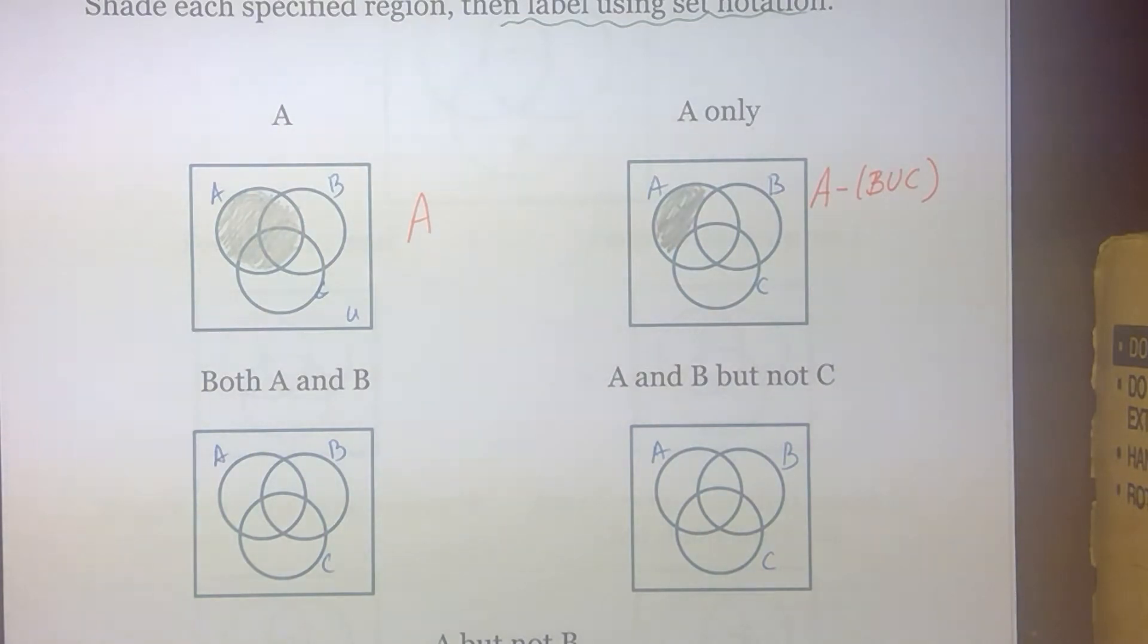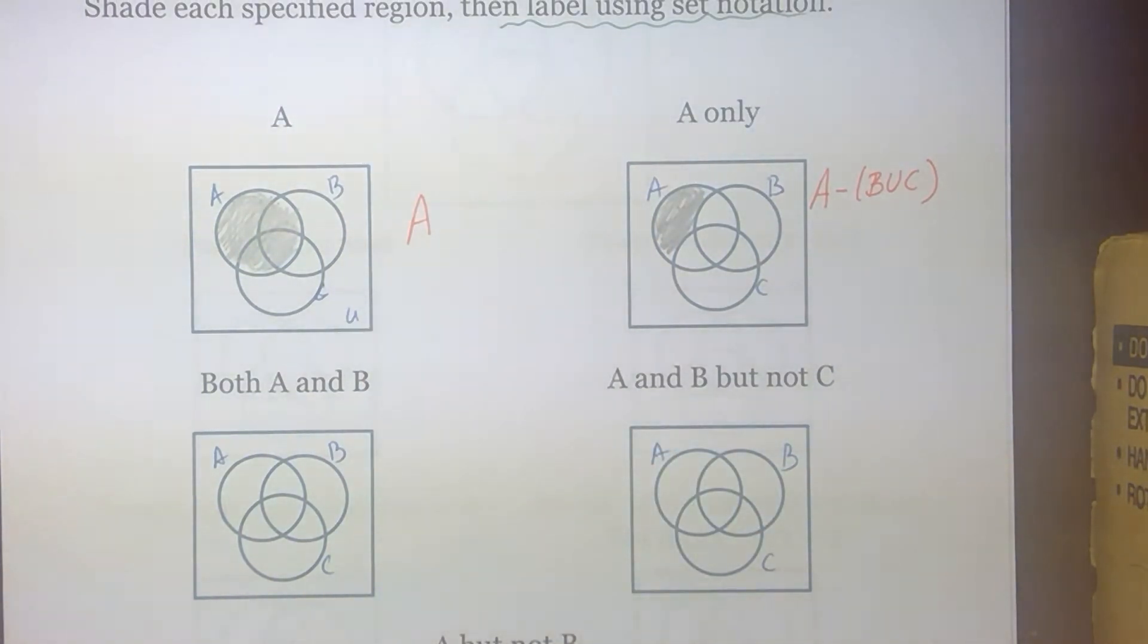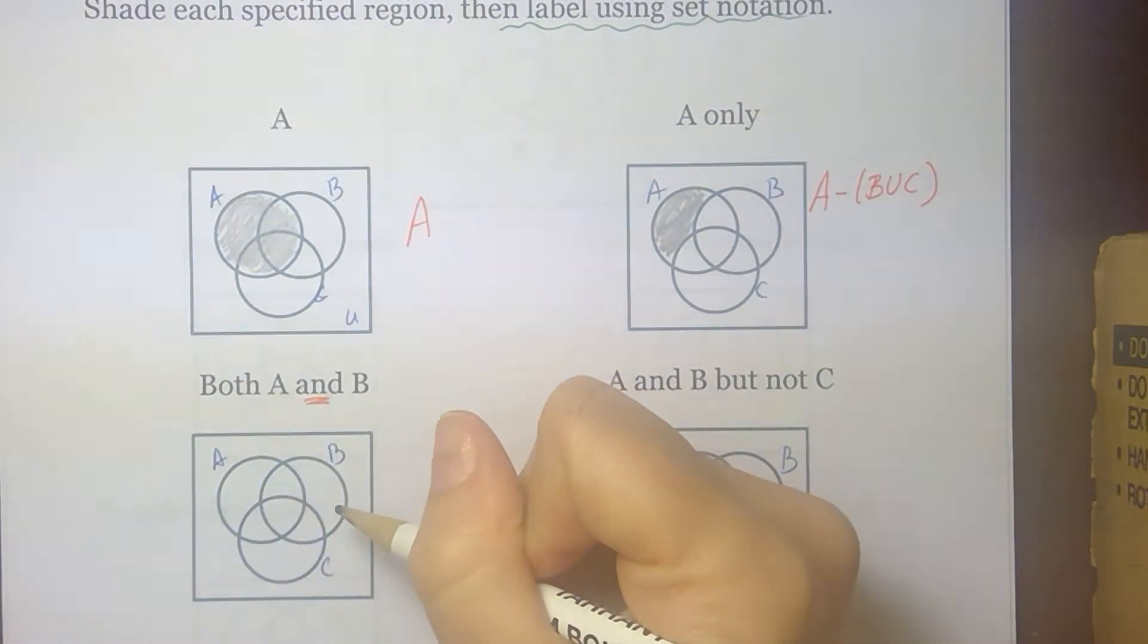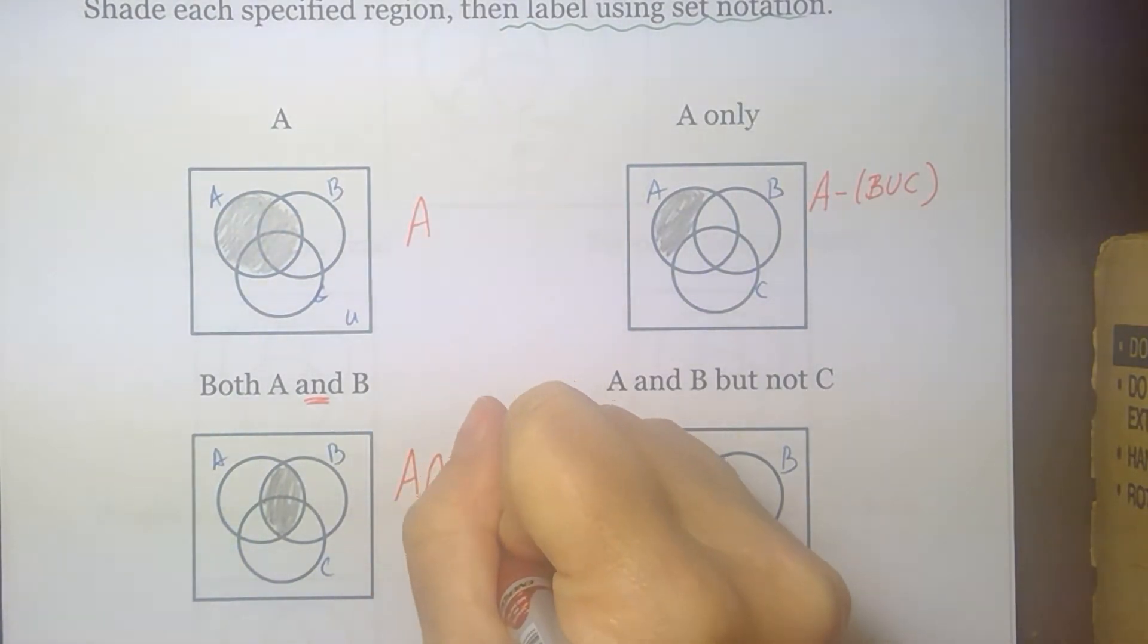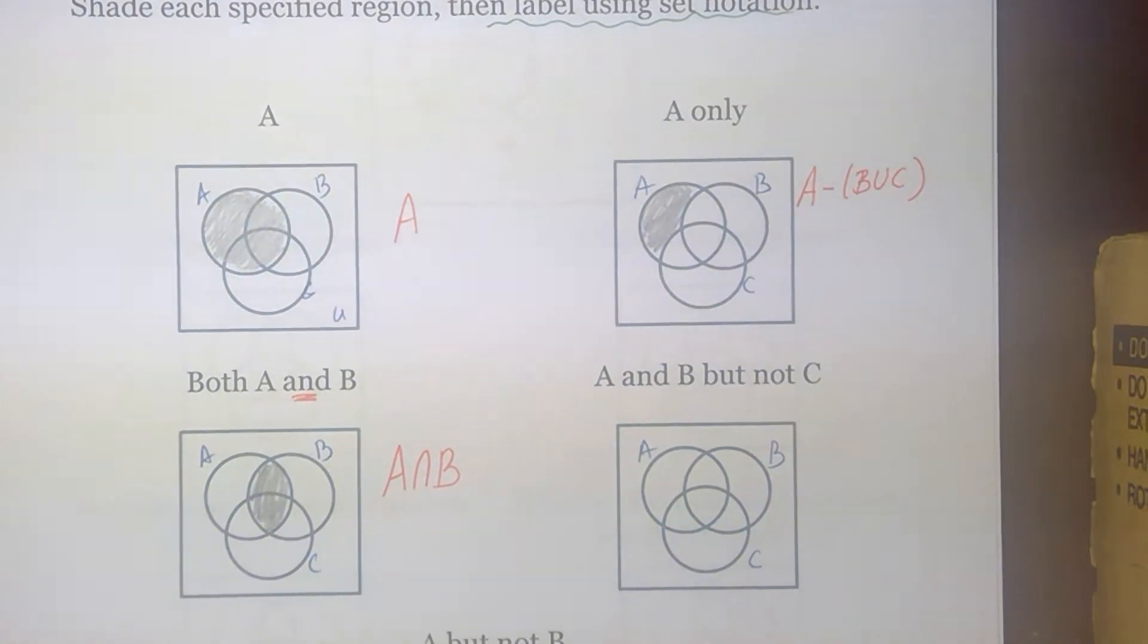What about both A and B? Well, and is my keyword. Remember, and means intersection. So which of my regions are in loop A and loop B? Well, these two regions, regions 3 and 5, are in both loop A and B. And my and is my intersection keyword. So that's my notation.